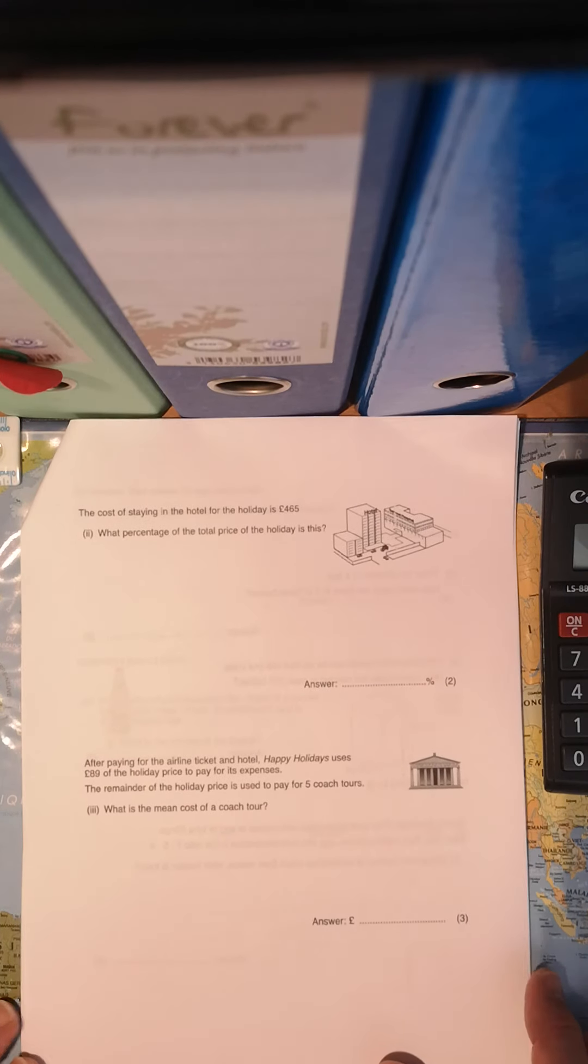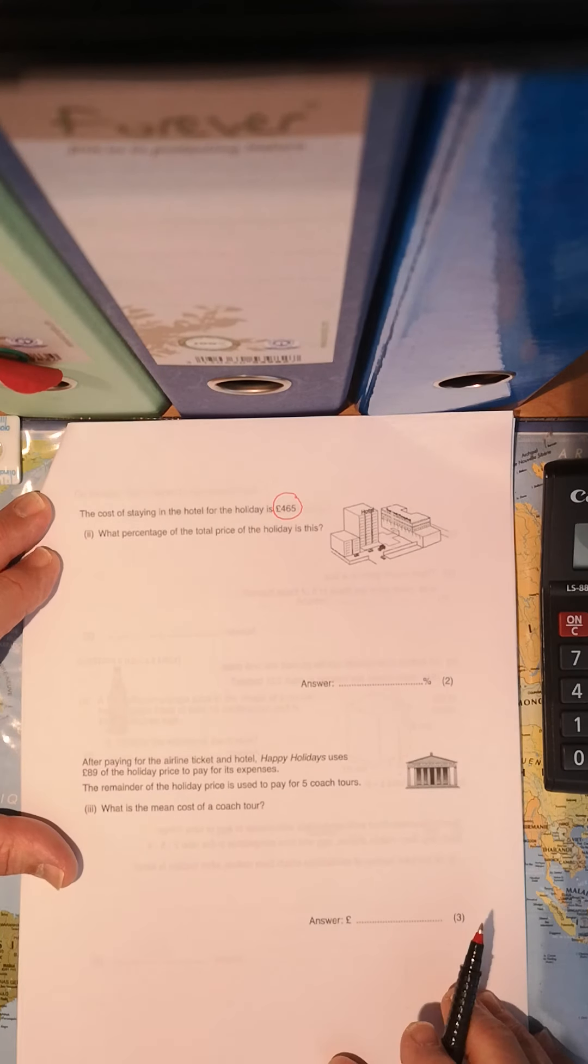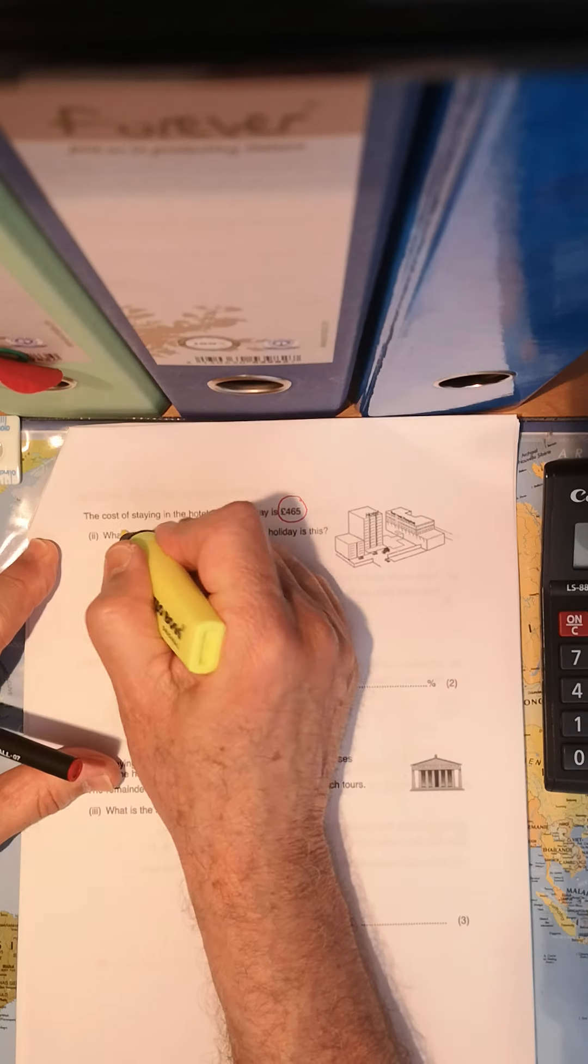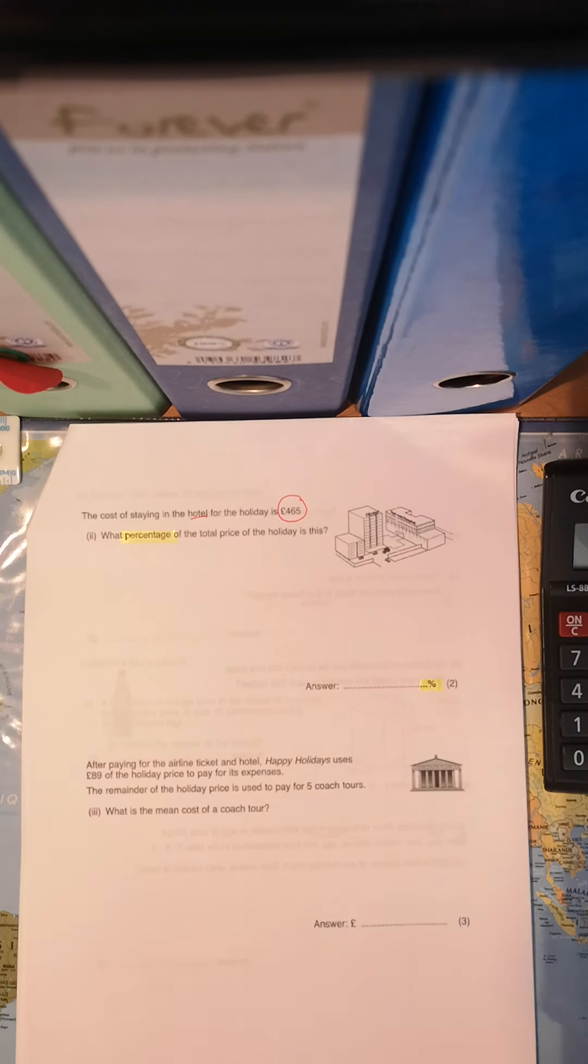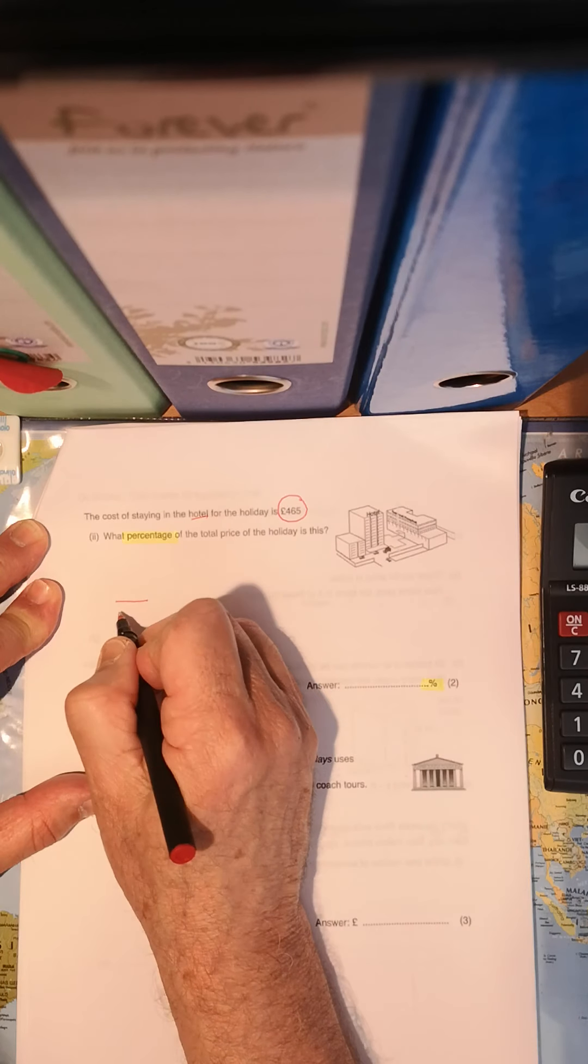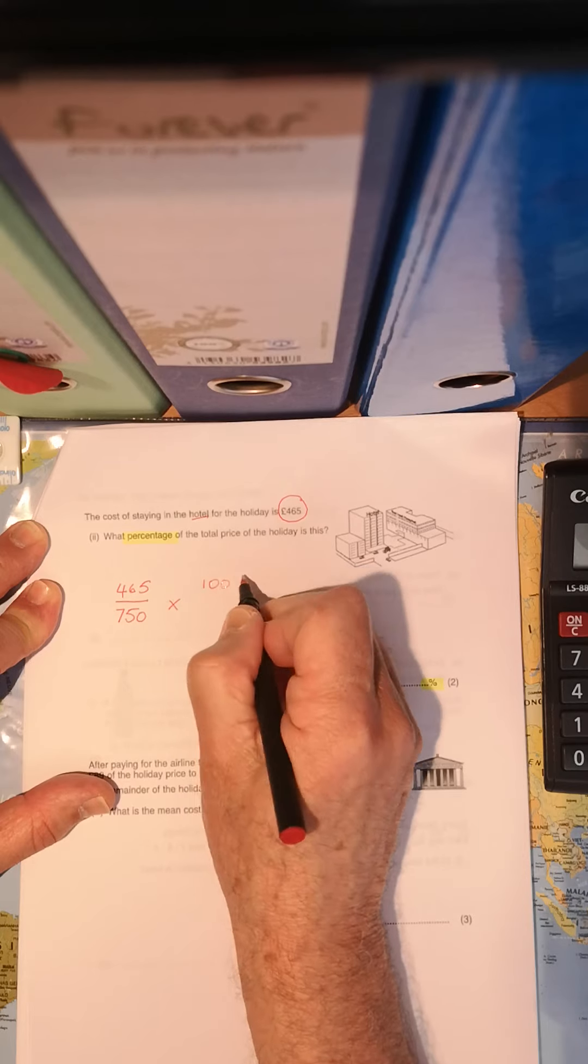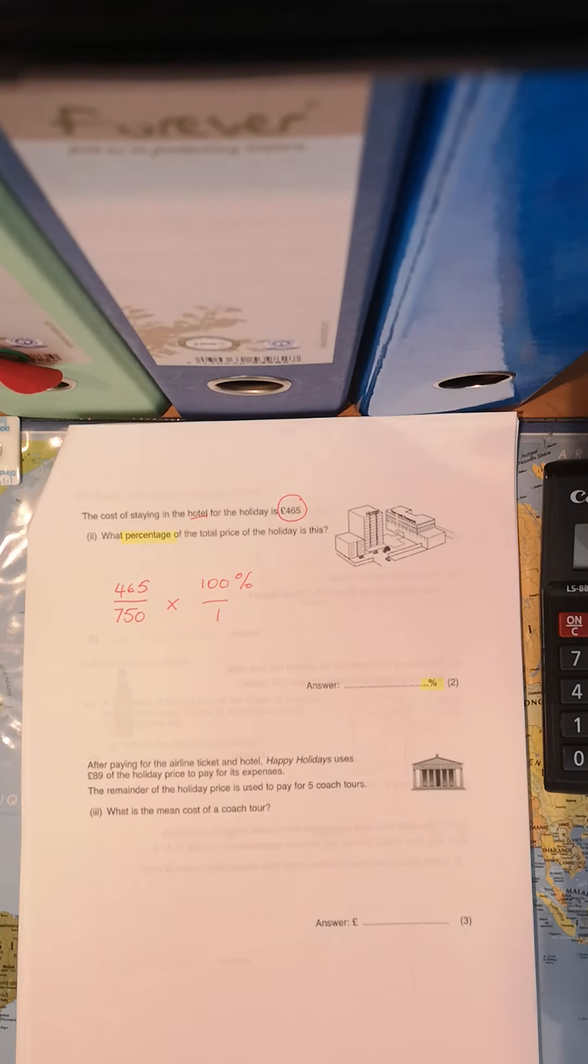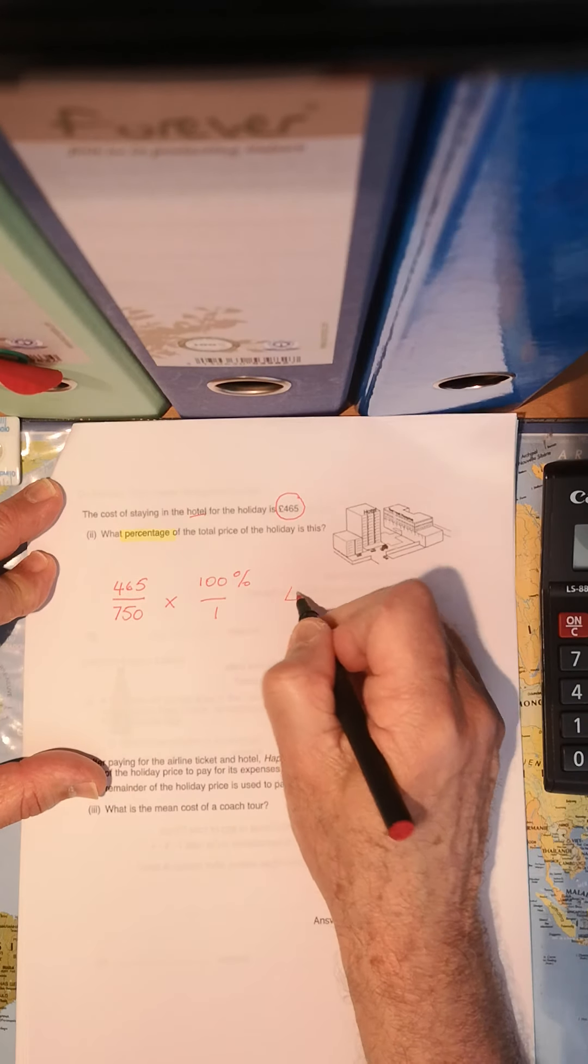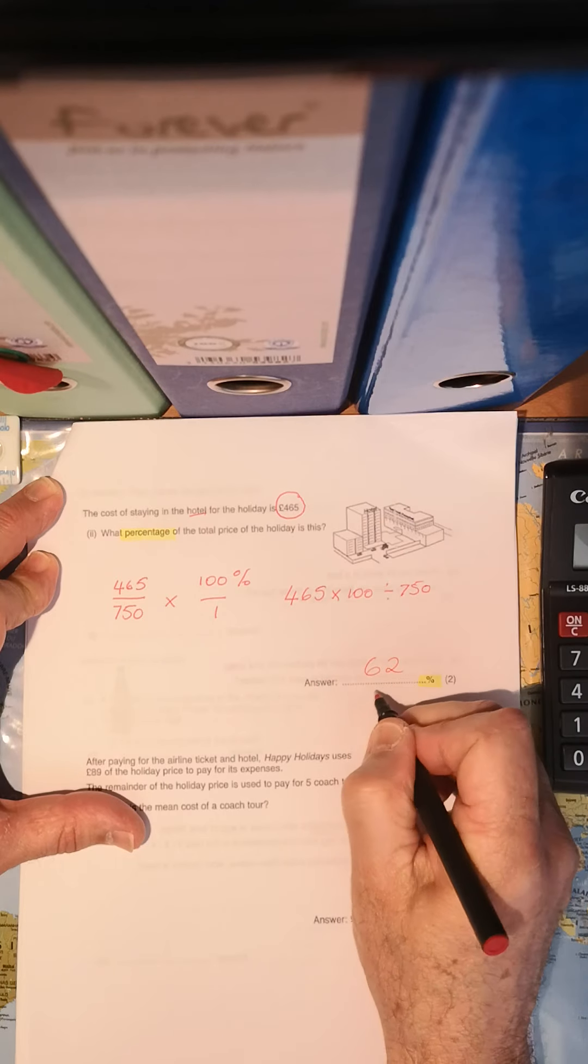Right. The question goes on. Now, the cost of staying in the hotel for the holiday is 465 pounds. So of that 750, 465 is for the hotel. Now, they're not asking us any amounts here. They are asking us a percentage. The answer must be a percent. So what percent of the total price of the holiday is that amount? So what was the total price? It was 750. That gets put over 750, and you multiply that by 100 because we want to know a percent. The cost of staying in the hotel as a percentage of the total cost of the holiday. So that would amount to, on your calculator, timesing that by 100 and then dividing by 750. And the exact answer you got on your calculator, 62.